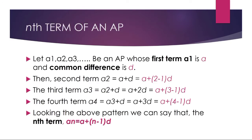Next, we are going to learn about the nth term of an AP. Let A1, A2, A3 be an AP where the first term A1 is A and the common difference is D. Then the second term A2 equals A plus D, which equals A plus (2 minus 1) times D.